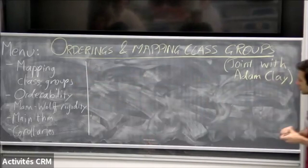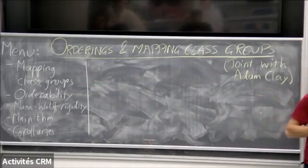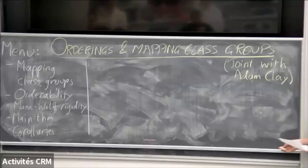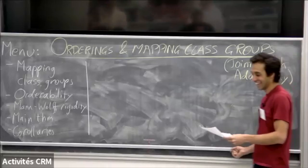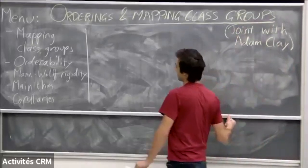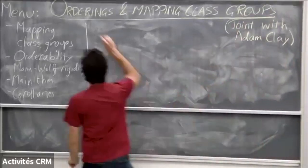This theorem was described as embarrassingly elementary, I think by Adam or maybe the referee — I can't remember. It's like there's a high chance of the reference in the audience as well. All right, let's agree with it. So let's start off with mapping class groups.